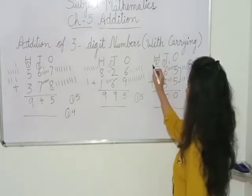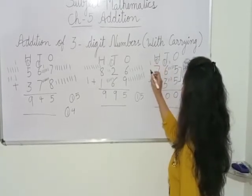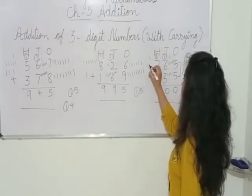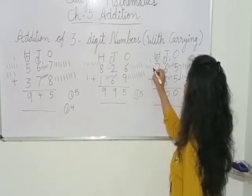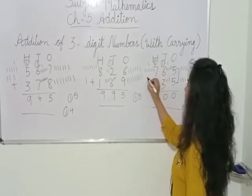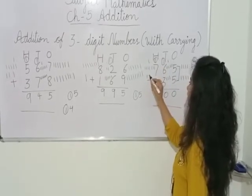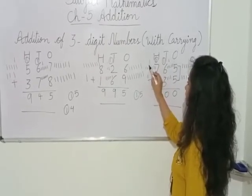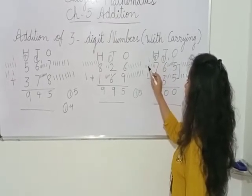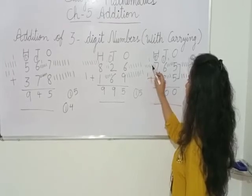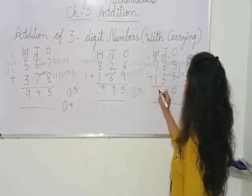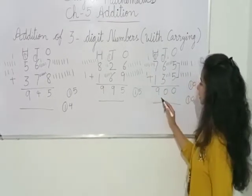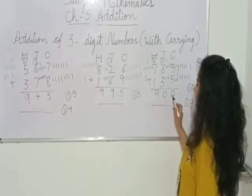1 is carried, we draw 1 line. 7 is there, we draw 7 lines: 1, 2, 3, 4, 5, 6, 7. Here is 1 more, we draw 1 line. Now let's count: 1, 2, 3, 4, 5, 6, 7, 8, 9. So what is our answer? Our answer is 900.